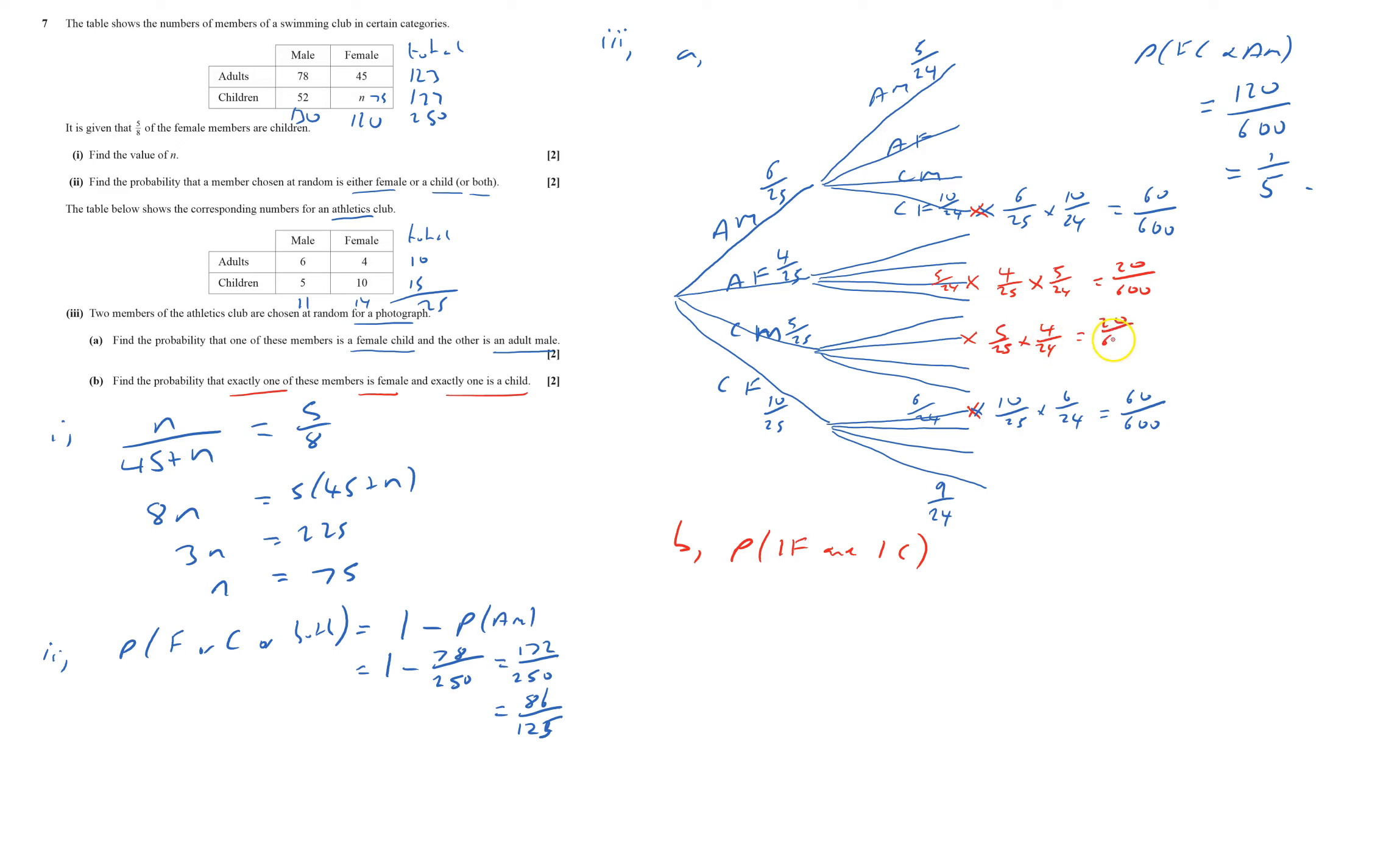And so if I then add these all up, I'll get 60, 120, and then 160. That's 160 out of 600, and that is the same as 4 fifteenths, and that's done.